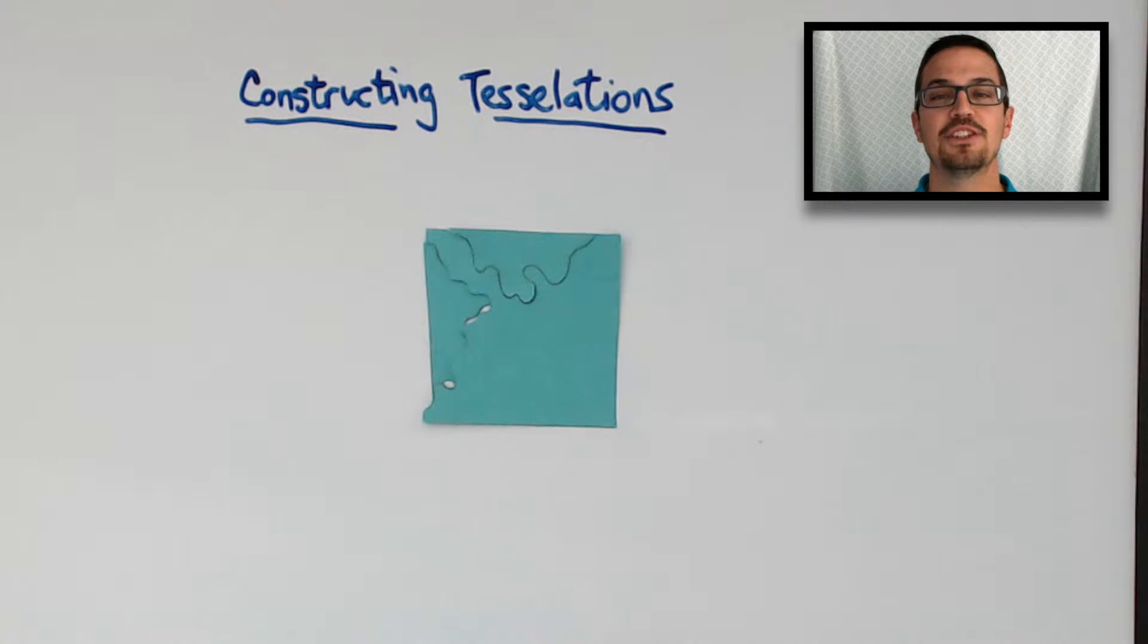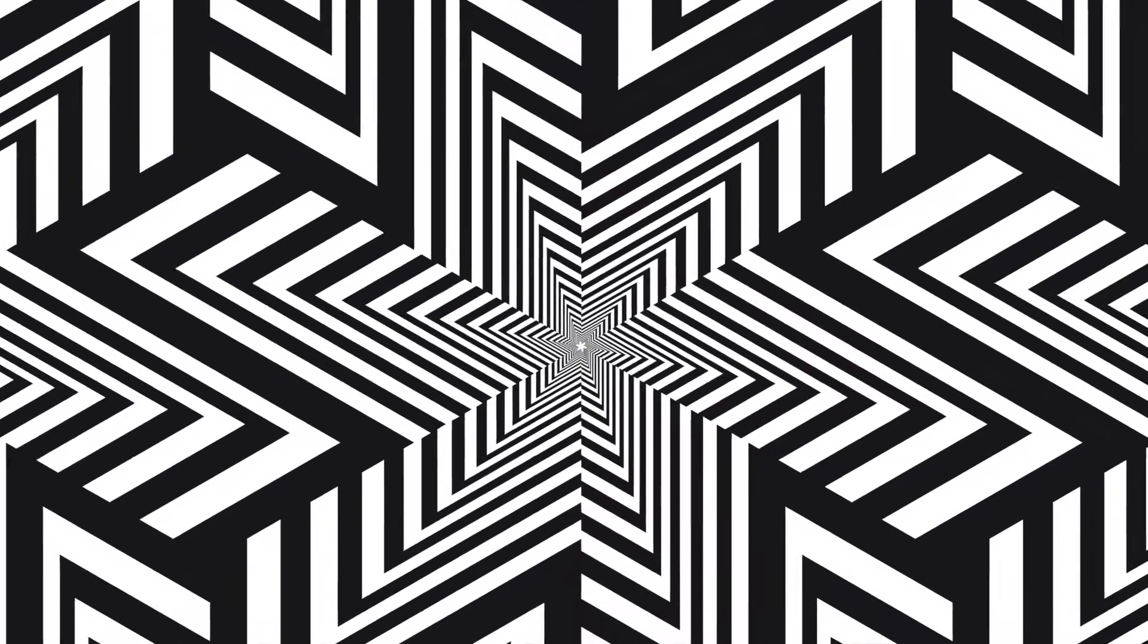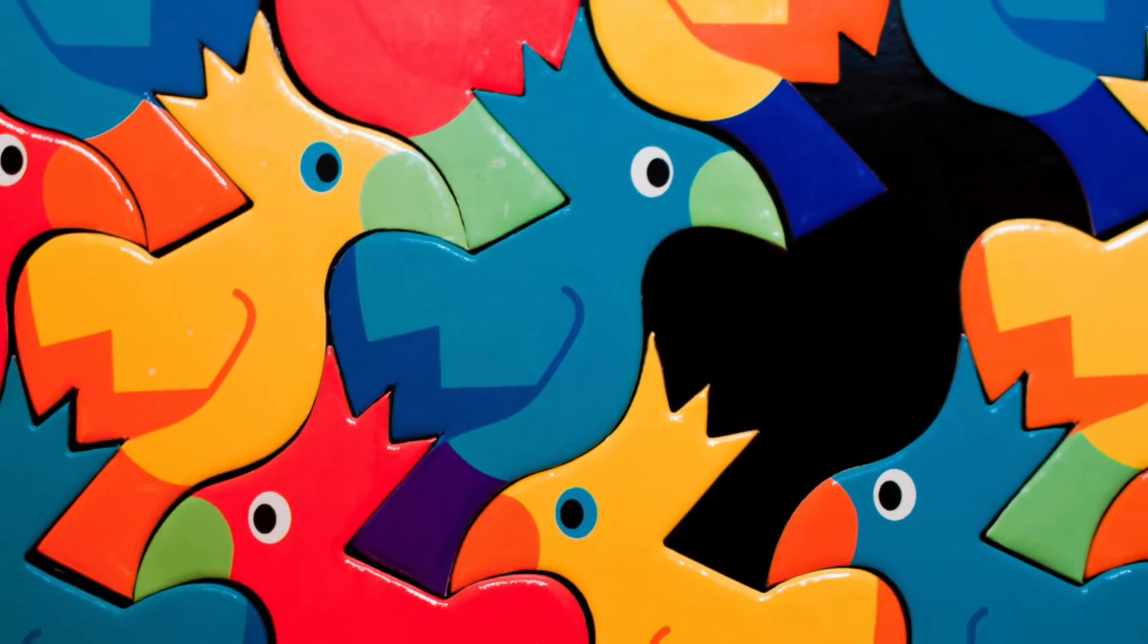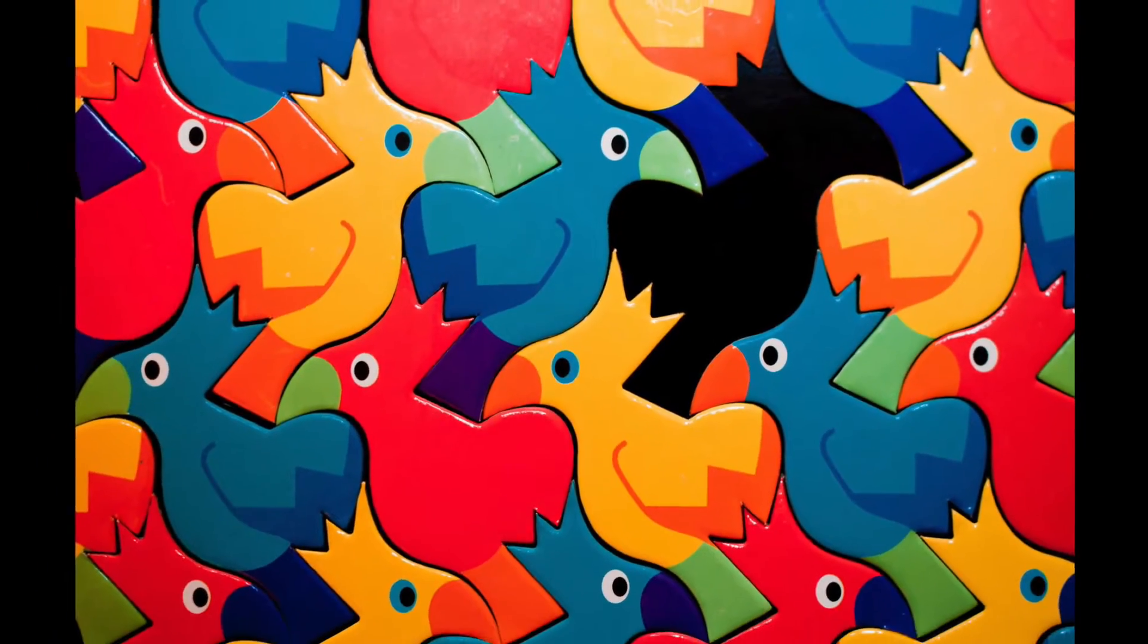Basically, a tessellation is like a puzzle, only every single piece has the same shape and fits together with itself. Examples of tessellations are as follows. Notice that the tiles do not overlap or have any gaps between them. Also, notice that the tiling has a specific pattern to it.